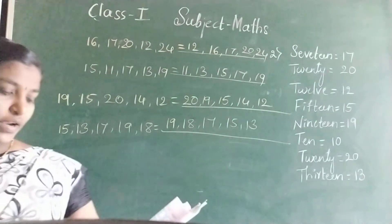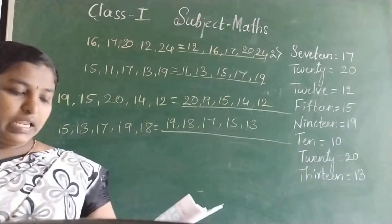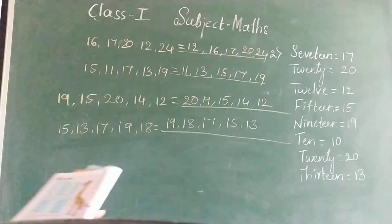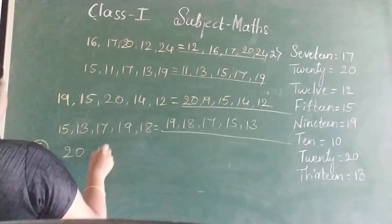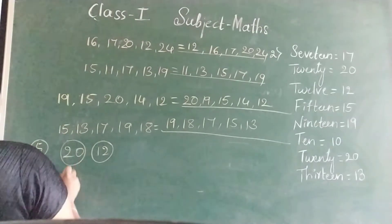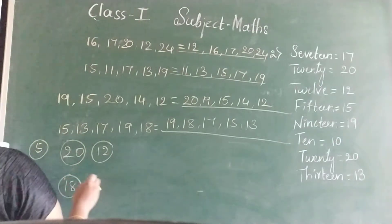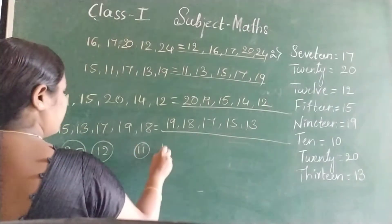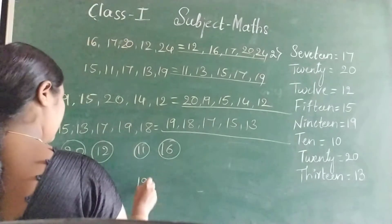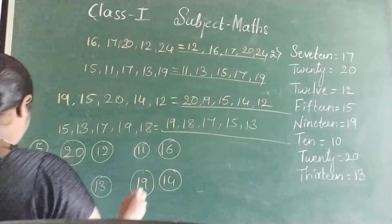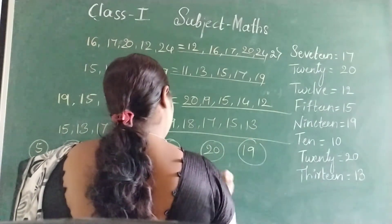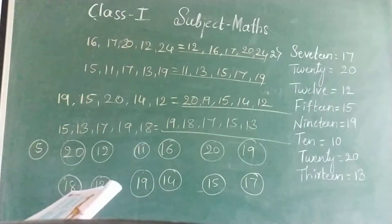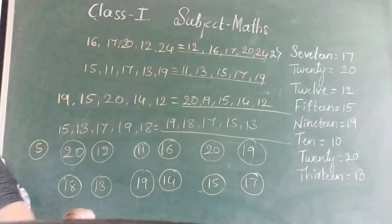Colour the greater number green and the smaller number red. Fifth question. Colour the greater number green. And first write all the numbers in circle. 18, 13, 11, 16, then 19, 14, 20, 19, 15, and 17.